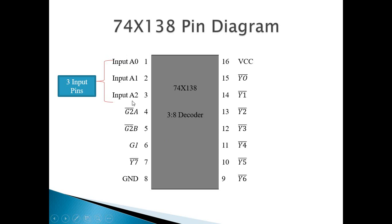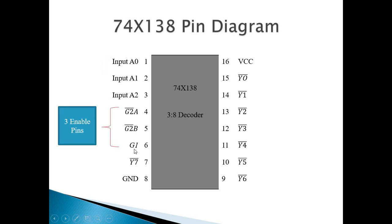So these 3 are input lines. Then these 3 are the enable pins. Pin number 4 is G2 bar A, pin number 5 is G2 bar B, and pin number 6 is G1. As pin numbers 4 and 5 are represented by complement input, they are active low. So pin numbers 4 and 5 are active low enable pins and pin number 6 is active high enable pin. There are a total of 3 enable pins. The reason behind using 3 enable pins is to avoid the use of more number of NOT gates at the time of cascading.